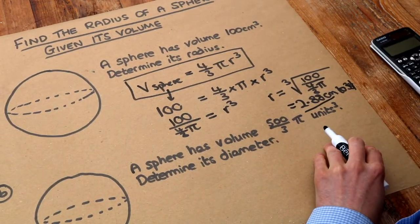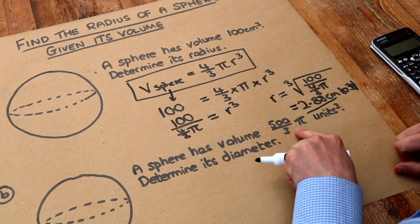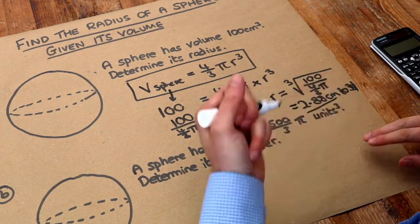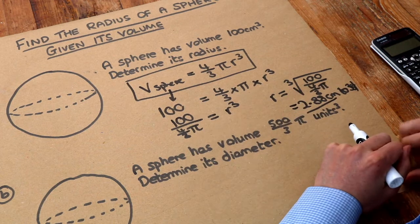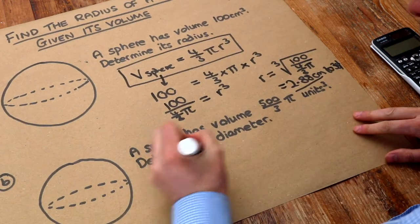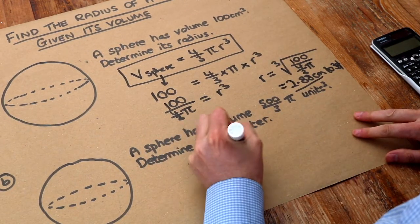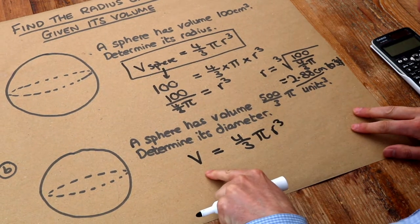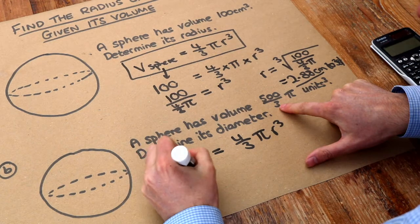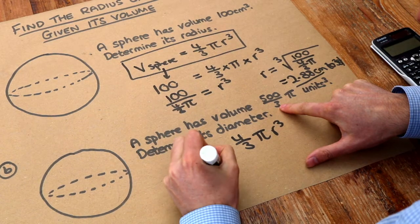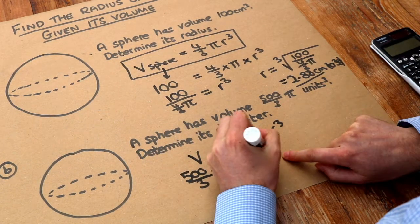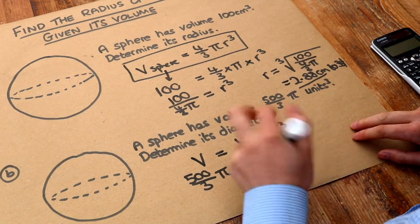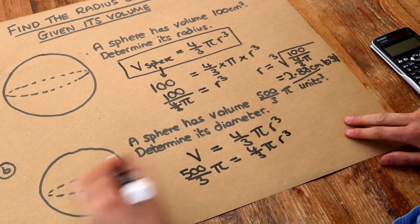What about the second one? The only difference here is that the volume is given in terms of pi. Now when that happens you'll typically find that the pi will cancel when you solve the equation. Let's just do the same as we did before. The volume of the sphere is four thirds pi r cubed. Let's substitute in. Well the volume is 500 thirds pi, and then we've got four thirds pi times by the radius cubed. Again let's just write r cubed because we don't know what the radius is.